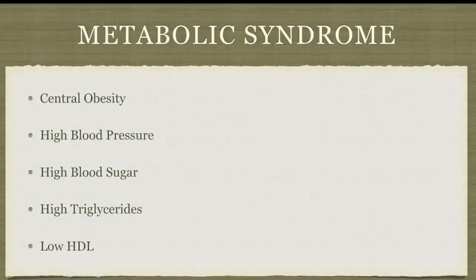Many people with type 2 diabetes have something called metabolic syndrome. They have central obesity, high blood pressure, high blood sugar due to insulin resistance, high triglycerides, and low HDL or good cholesterol. They are predisposed to a number of conditions including heart disease, strokes, and diabetes.